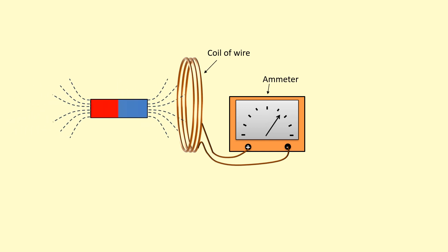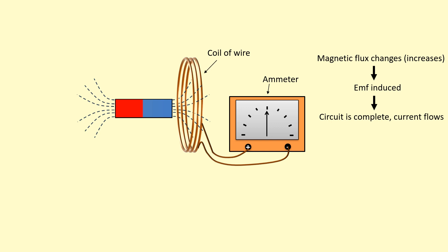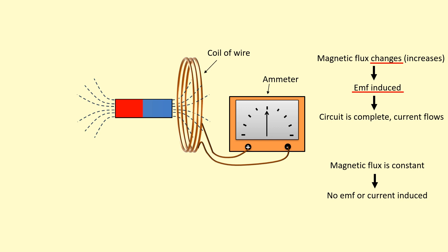If I move this coil in, the ammeter gives a reading. When the magnetic field lines go into the coil, there is an increase in flux — a change in magnetic flux linkage — and this induces an EMF. Because it's part of a complete circuit, there's going to be current flowing. Notice that when I hold the magnet right next to it, even though there is flux going through the coil, there is no reading. This is because there's no change in flux. When flux is constant, there is no EMF induced and no current. The key is there needs to be a change in the magnetic flux linkage for an EMF to be induced.